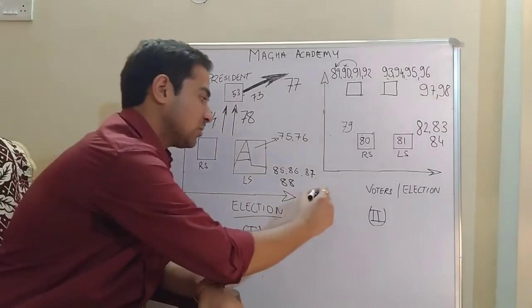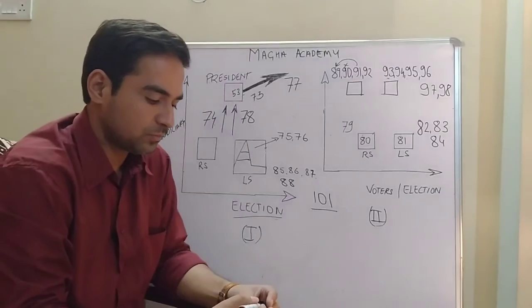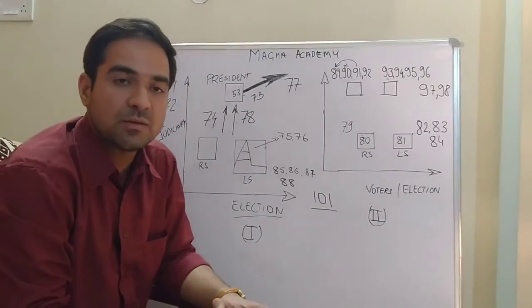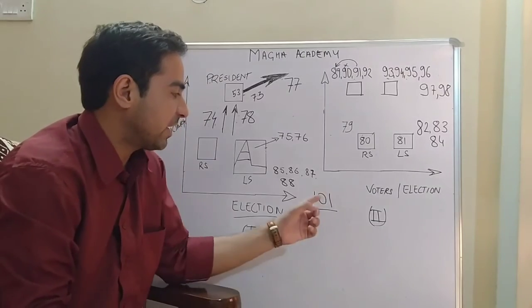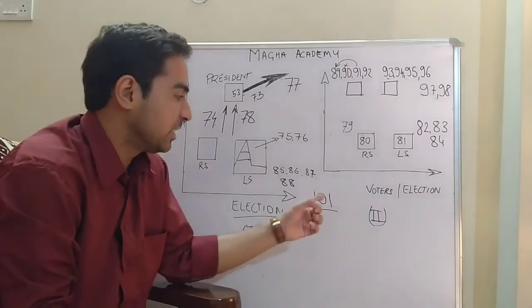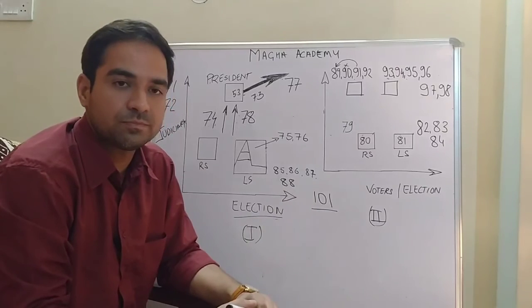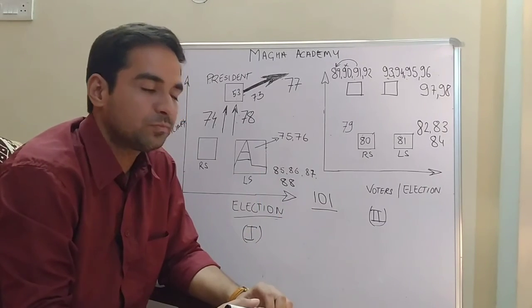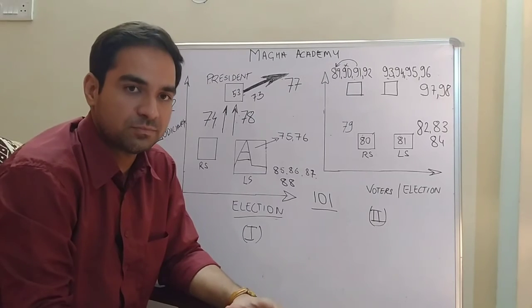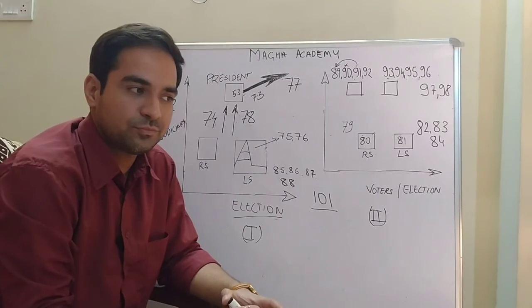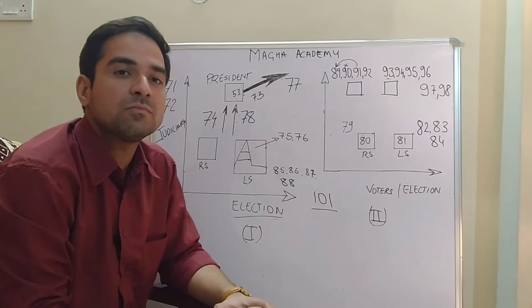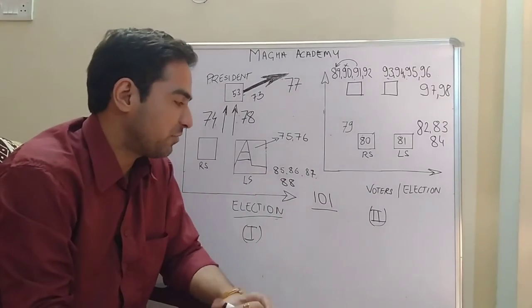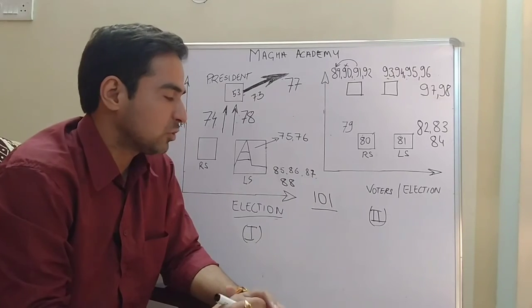And Article 101 - I always remember it with the zero in the middle, so vacant seat. You have to count: no member of Parliament. Article 102: disqualification. Article 103: decision of the President is final in the matter of disqualification. It is an important power.